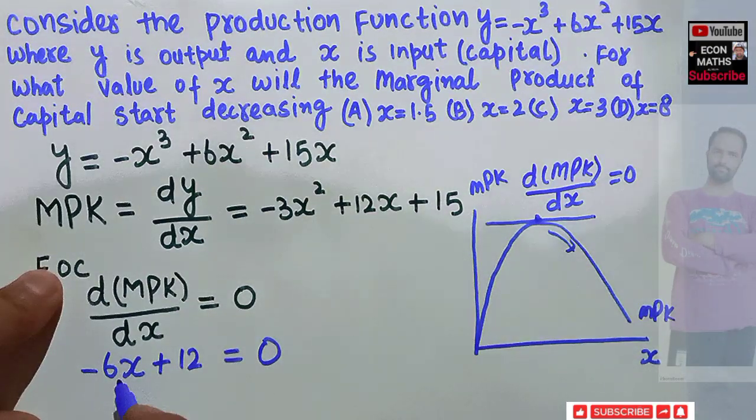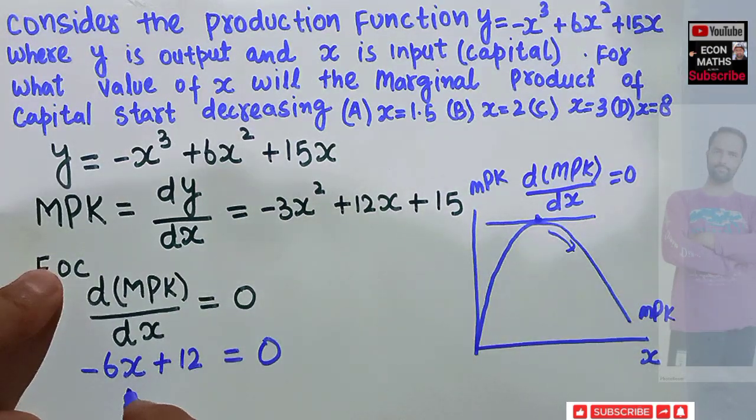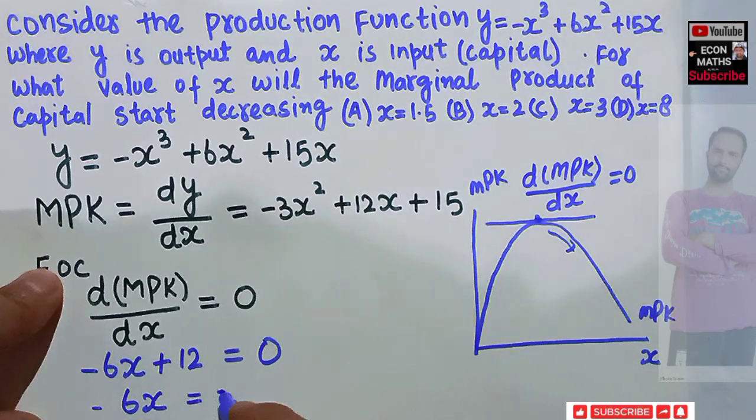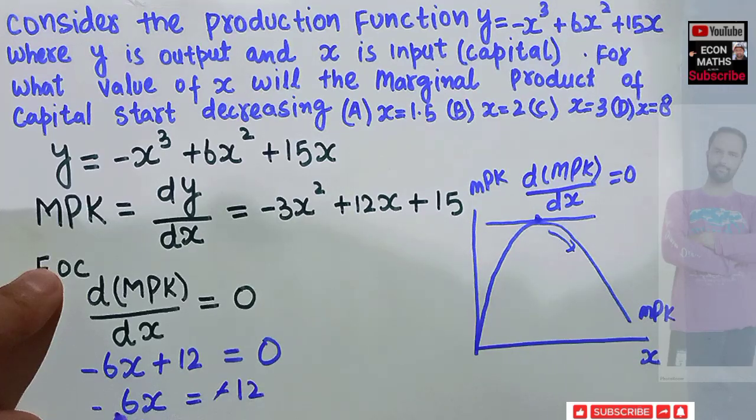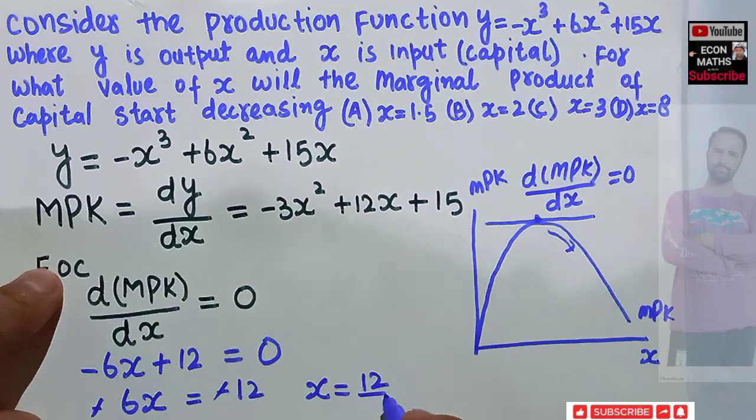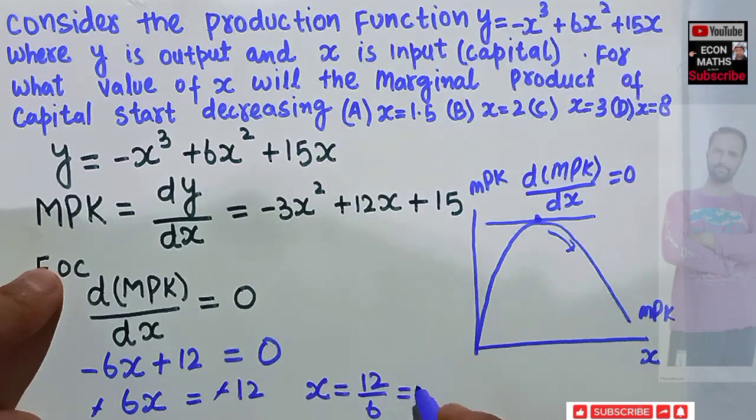Now transposing this 6x on the RHS, this will become 6x = 12. Minus minus gets cancelled, which gives us x = 12/6, which comes out to be 2.